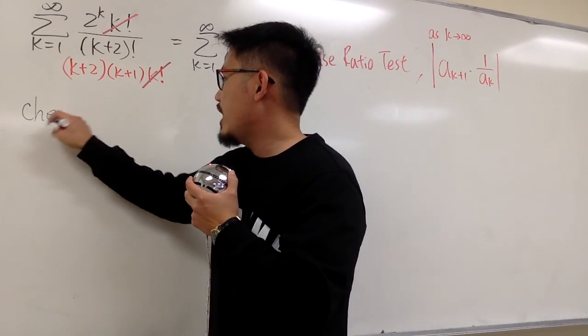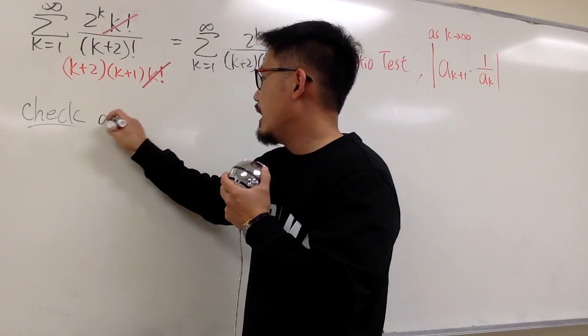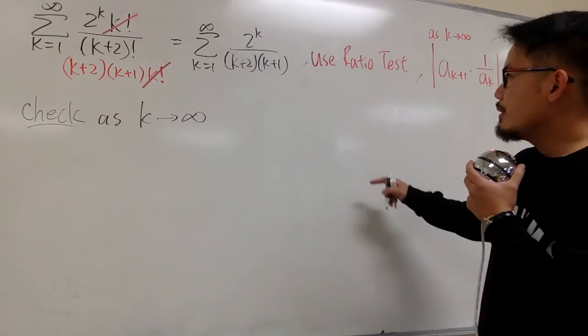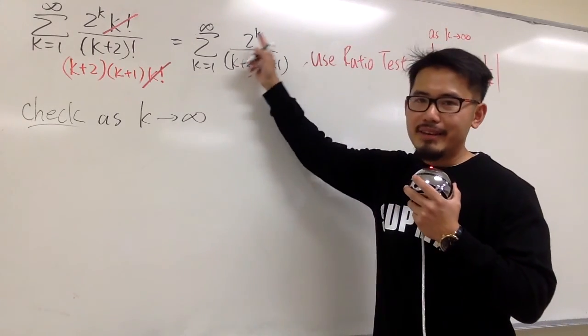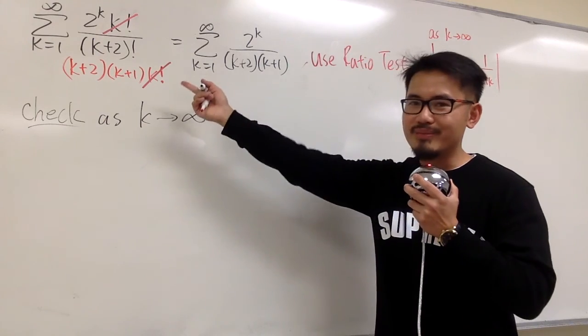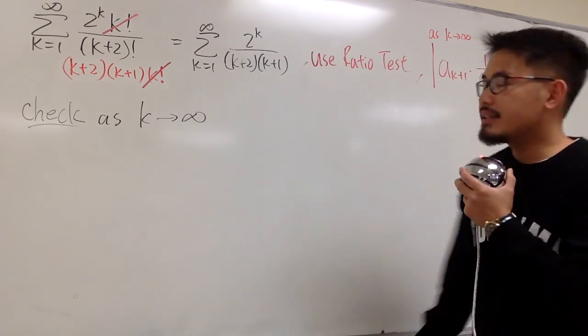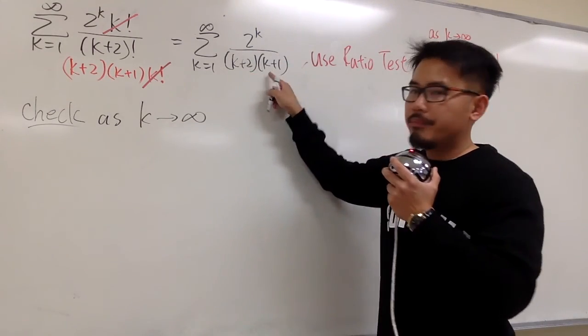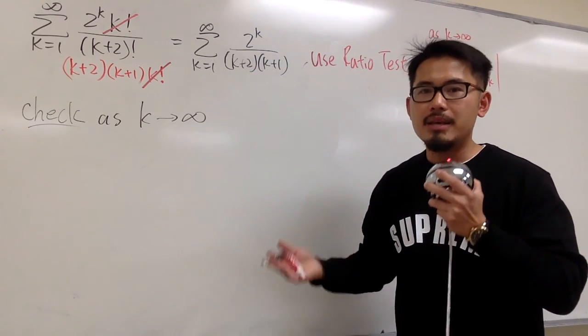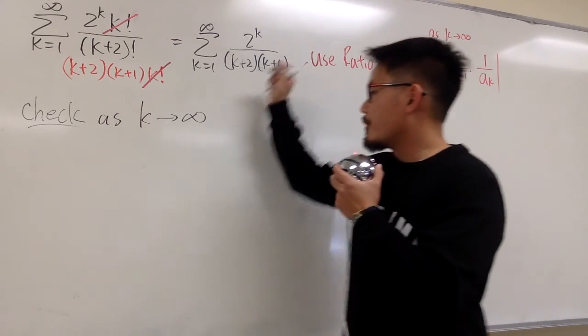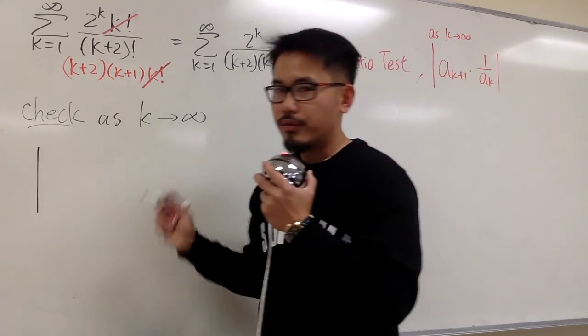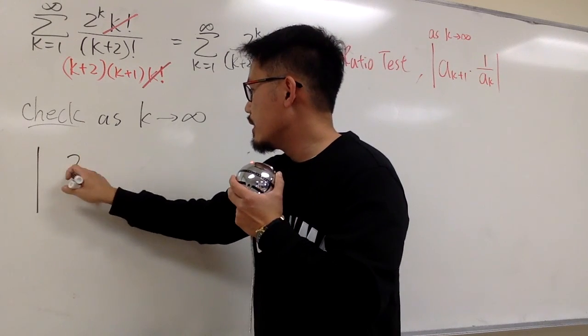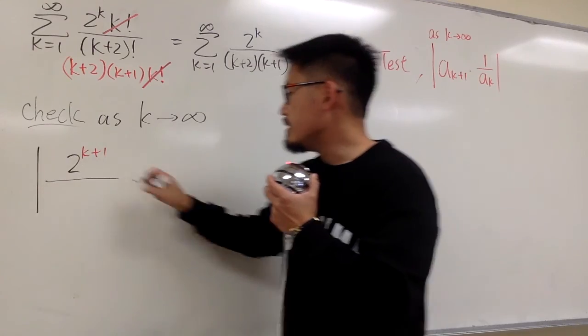I will put down, let's check as k goes to infinity. I am going to say this is my a_k now, it's a simplified version of the original, right? To get a_{k+1}, what we do is look at all this k right here and we plug in k plus 1. So let me put down the absolute value first. On the top we have 2 to the k plus 1. On the denominator, we will have this k becomes k plus 1.